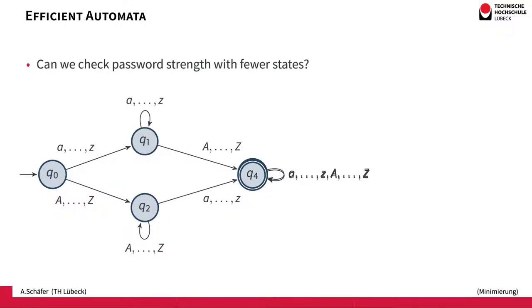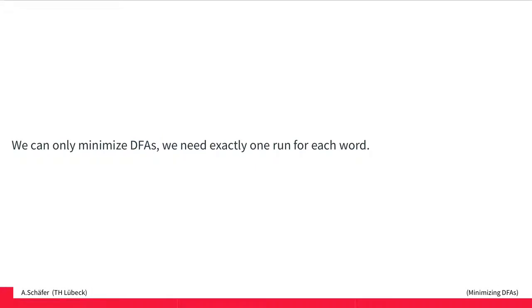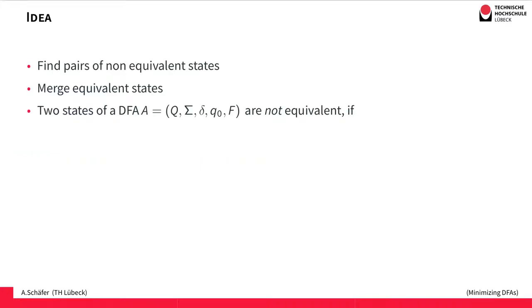That's already the general idea of the algorithm we are going to look at — it's about merging states that are actually equivalent. This algorithm works only for deterministic finite automata because we need exactly one run for each word. The algorithm works by finding all pairs of states that are not equivalent, and after finding those pairs, we can conclude that all other pairs indicate equivalent states that could be merged afterwards. Now we have to derive in which case two states are not equivalent.